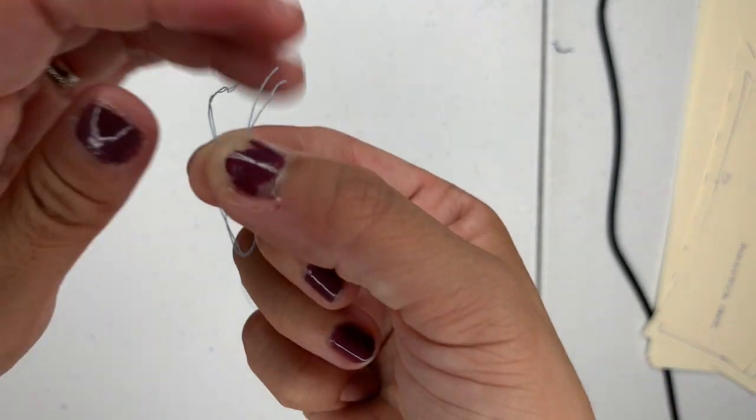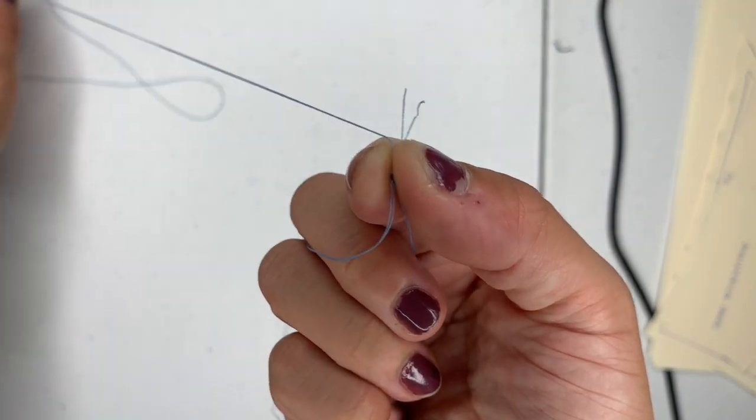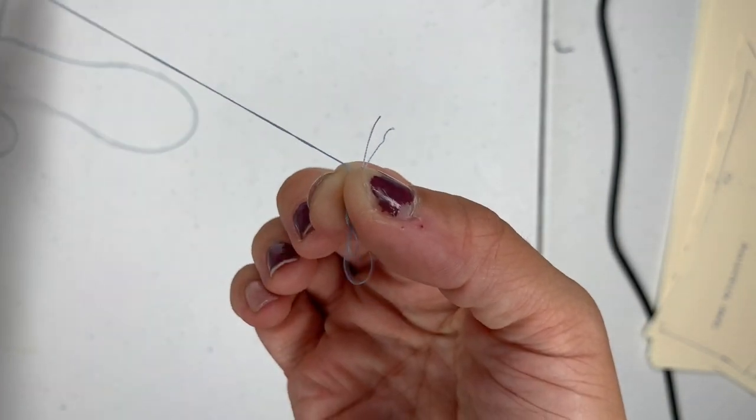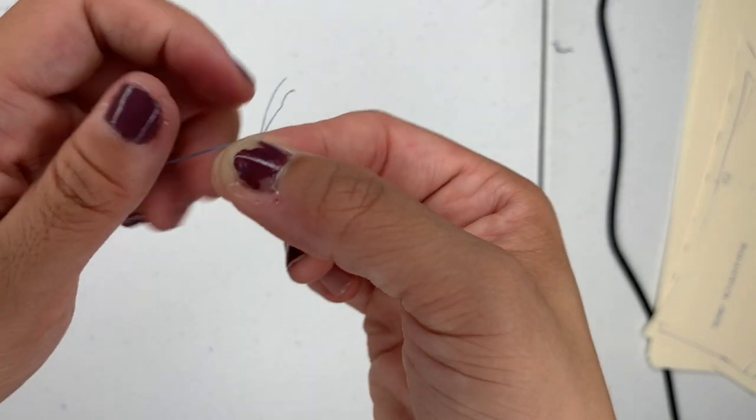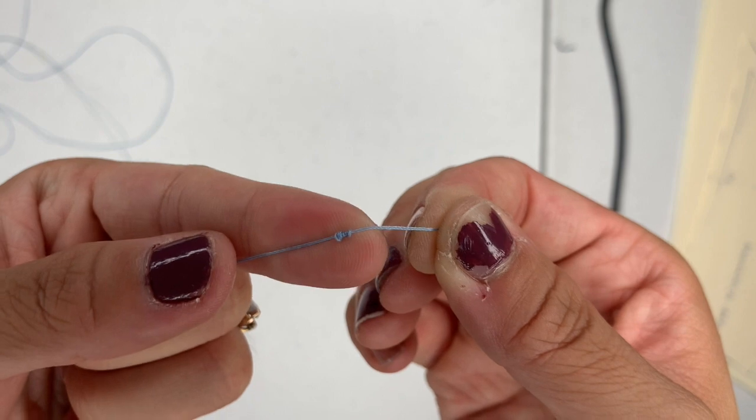So you can still see the knot in there, and I'm just pulling that all the way down the length of the thread. I've got a really long thread here because I needed a long tail for my next project. But what's going to happen is once you get to the end, you can see that knot has been created all the way at the end of the thread.